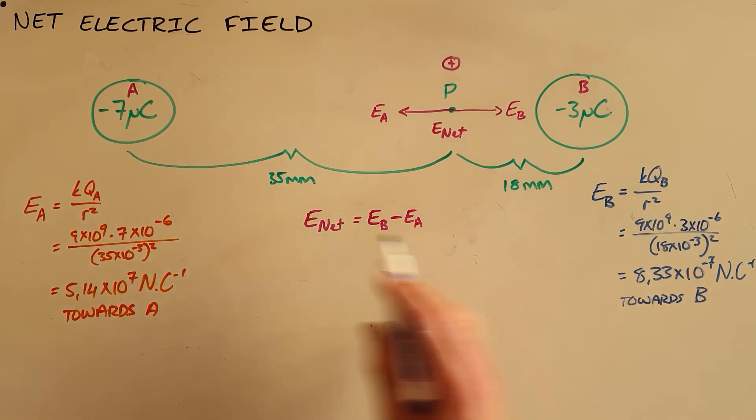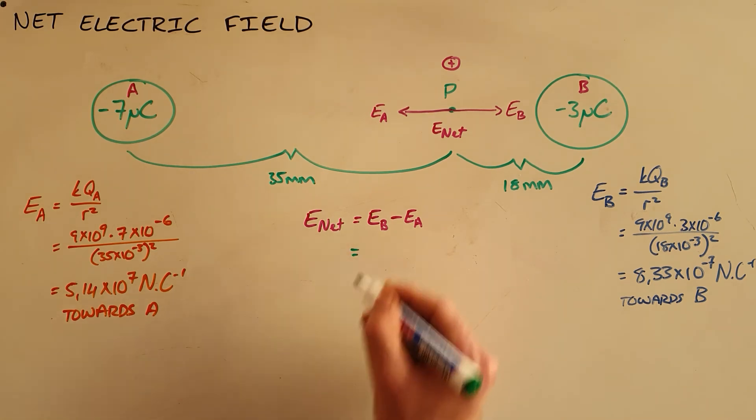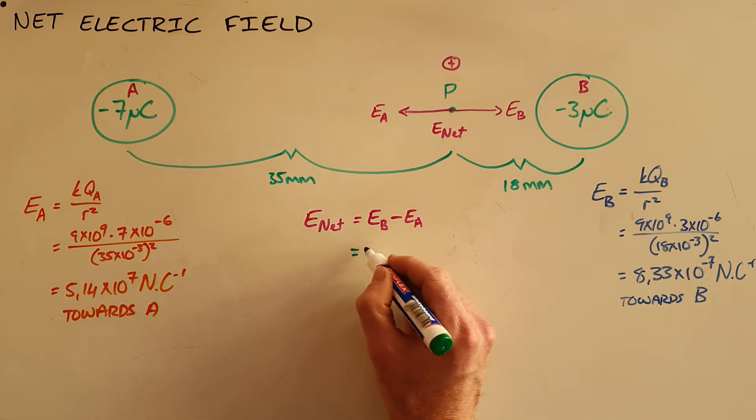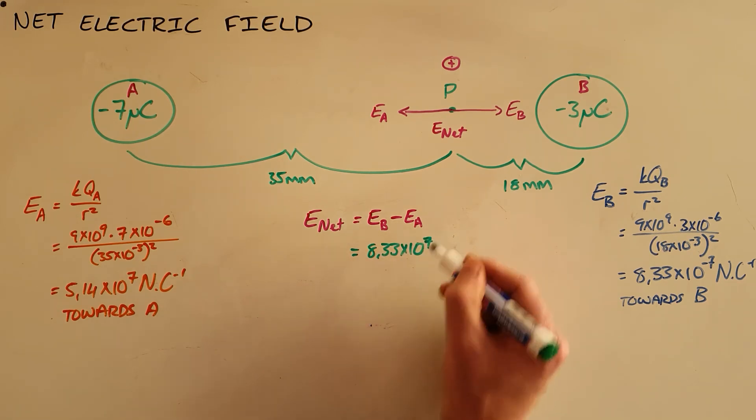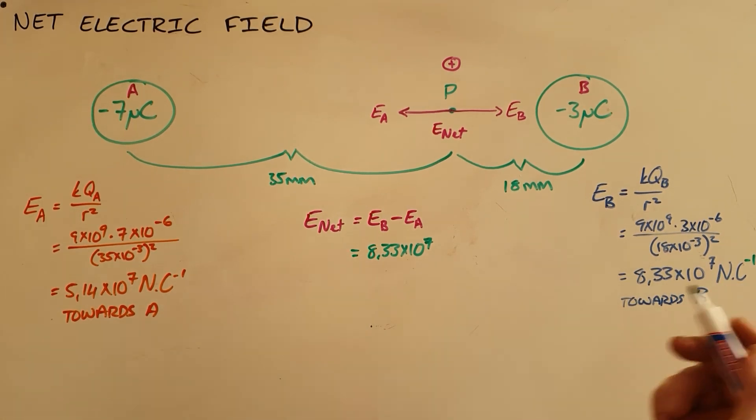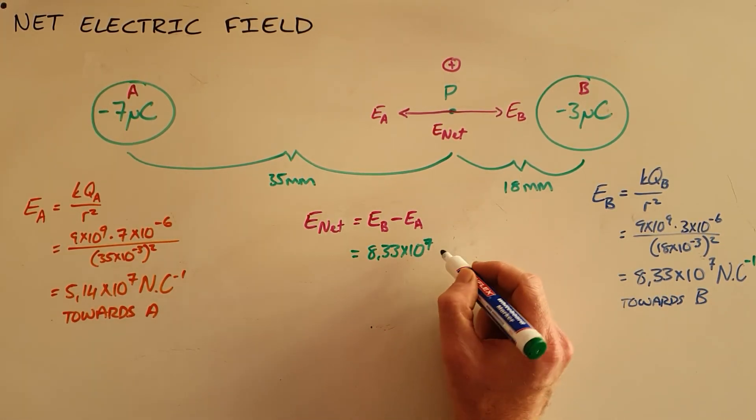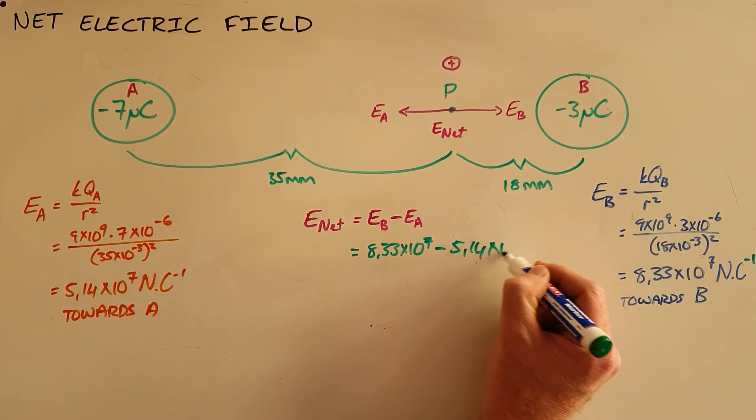So we can now clearly see why we have subtracted these, because the forces are in opposite directions, so the electric fields are in opposite directions. And we can now calculate our net electric field as 8.33 times 10 to the 7, apologies that is times 10 to the 7, 8.33 times 10 to the 7 minus 5.14 times 10 to the 7.